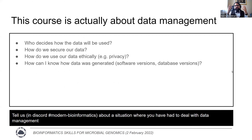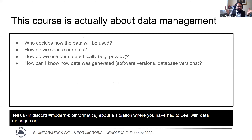This course is actually more about data management than it is about genomics per se. The kind of questions you run into when dealing with genomic data — you suddenly have to think more and more about things that aren't really about the science. Problems like: who decides how the data will be used? How do we secure our data? How do we use our data ethically in terms of privacy concerns? How do I know how data was generated in terms of provenance — software versions or database versions — so that I can reproduce it or someone else can follow what I've done?